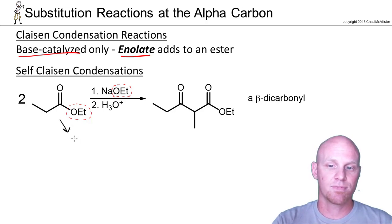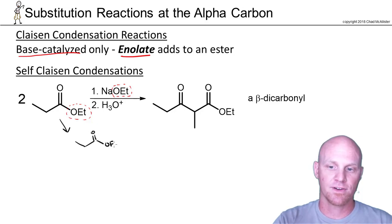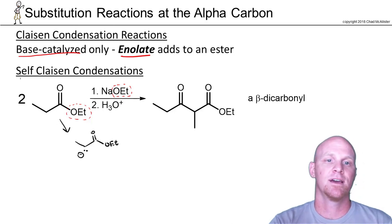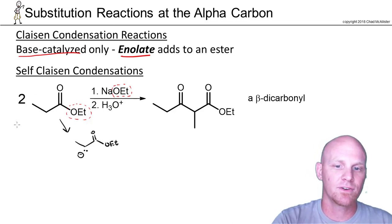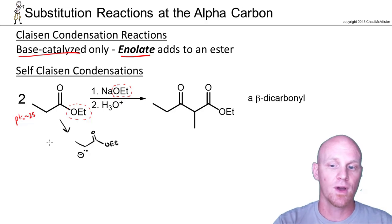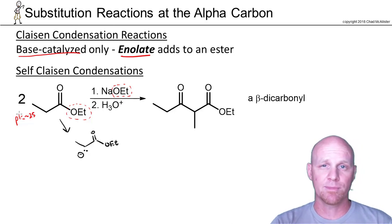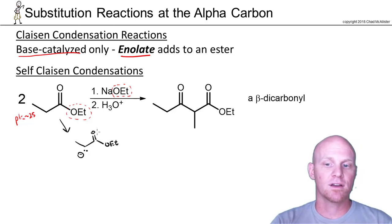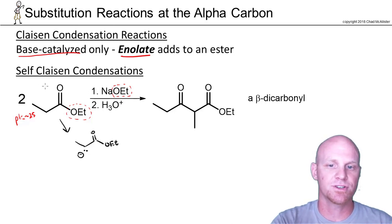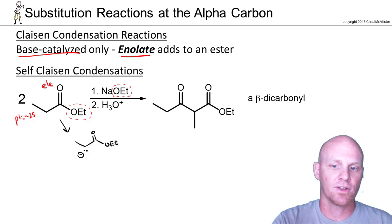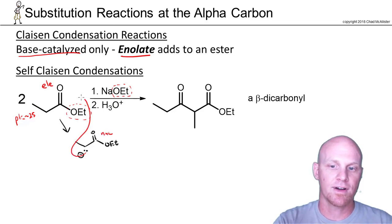So we're going to deprotonate one of our molecules at the alpha carbon and form the enolate. The pKa of our ester is on the order of about 25, so we might deprotonate only one out of a hundred million molecules — we're not going to form a lot of this enolate. We'll have a lot of ester left back in solution, and the one that's still an ester is our electrophile. The enolate that forms is our nucleophile, and it will come in and attack the electrophile.